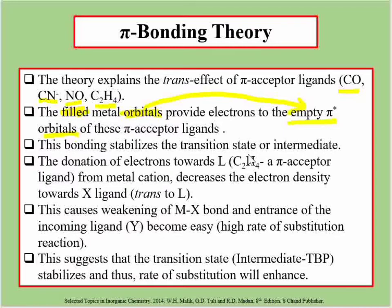This bonding stabilizes the transition state or intermediate. In square planar complexes, the transition state or intermediate is trigonal bipyramidal. Before, we said that there are two main factors of trans effect: weakening of the M–X bond, and stabilization of the transition state. The pi bonding between metal and pi acceptor ligands explains the stabilization of the transition state.